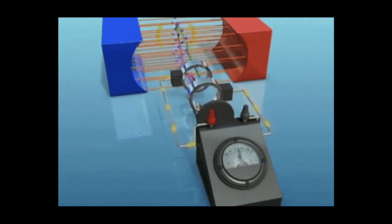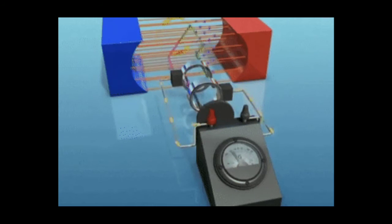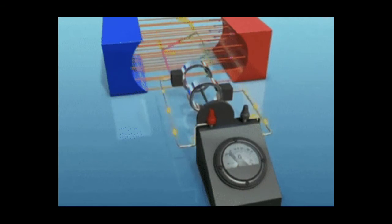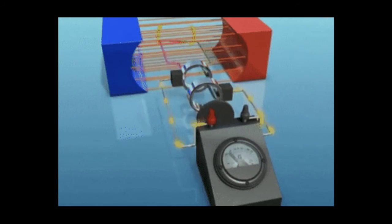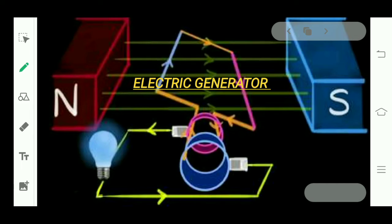This is not an electric motor — it seems like one, but it's not. In a motor we had one split ring, but here there are two split rings. Also, in a motor we have a battery connected with the brushes, but here we have a galvanometer instead of a battery. So can you tell me what it is? Yes — it is an electric generator!